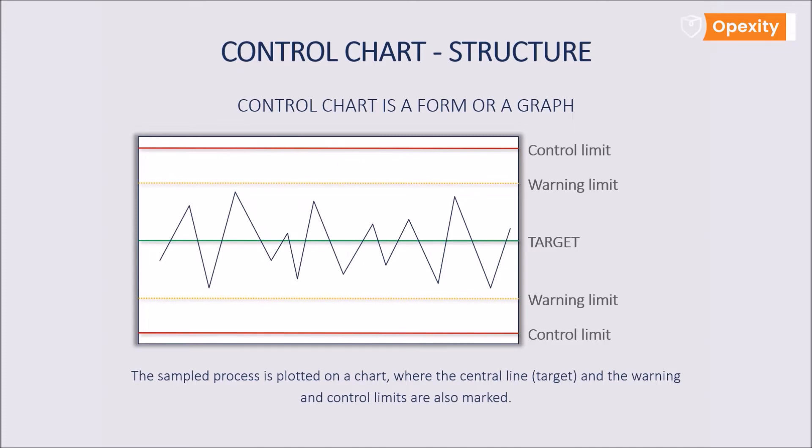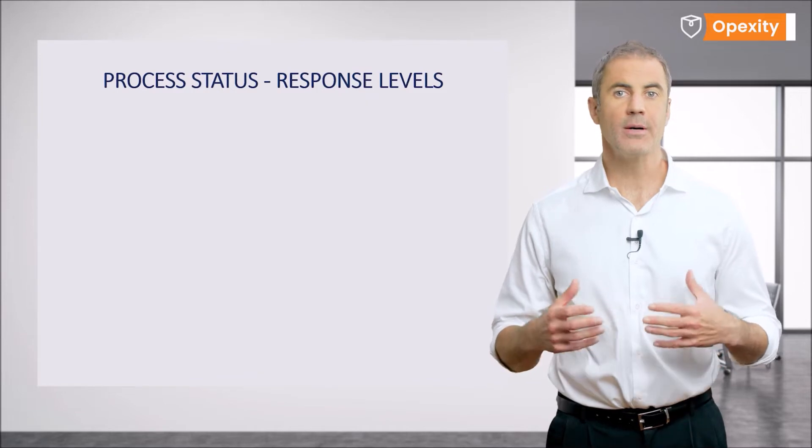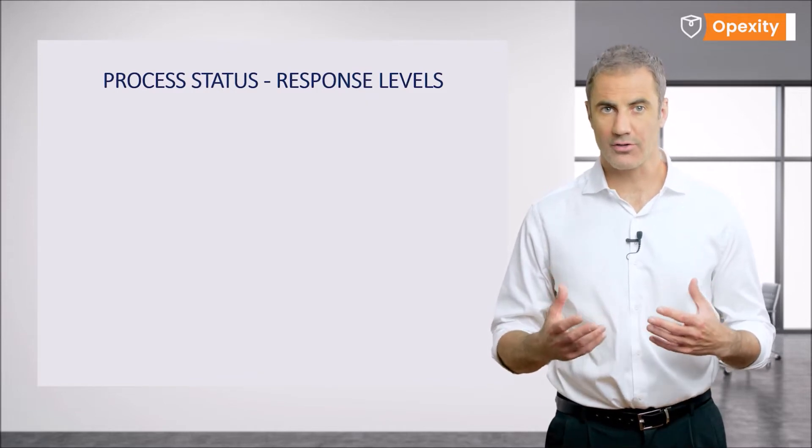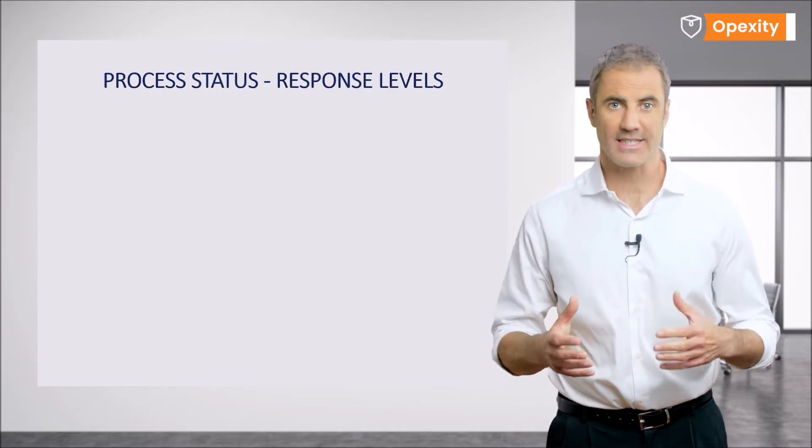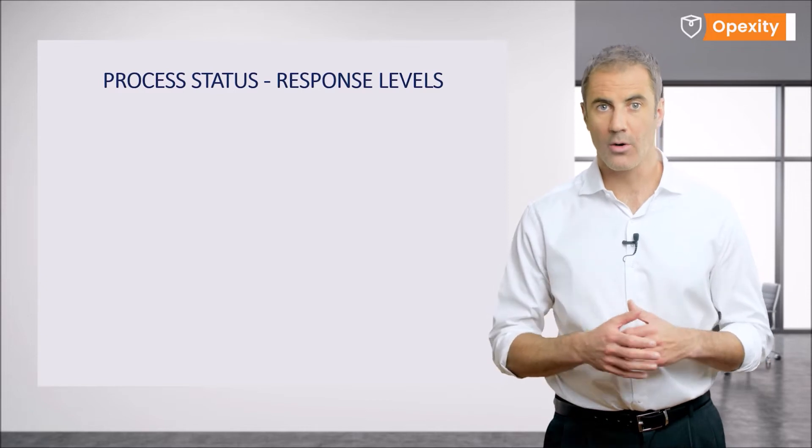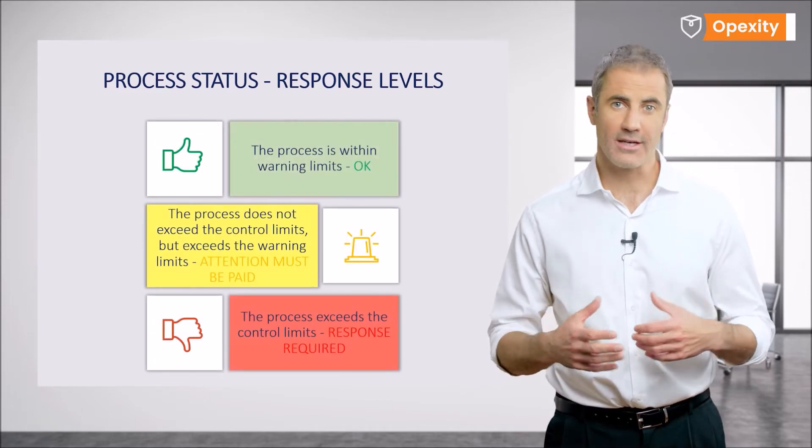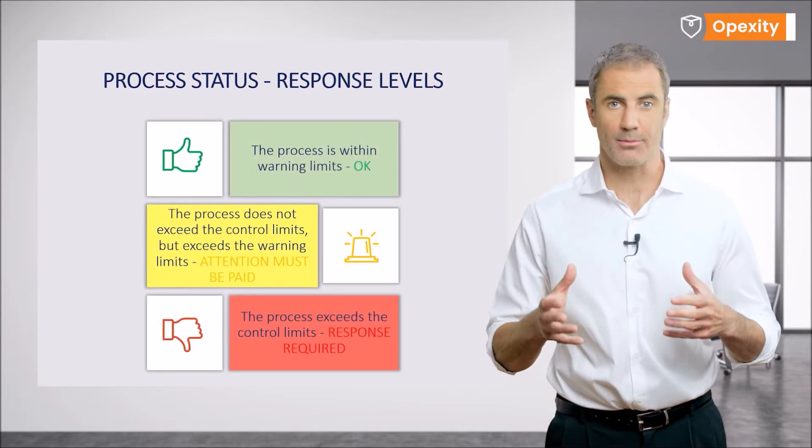Now look at the chart on the slide. We will designate control limits, warning limits, and central line. The determined limits and the central line correspond to the status of the process at any given moment, with the entry of values resulting from the examination of each sample taken.